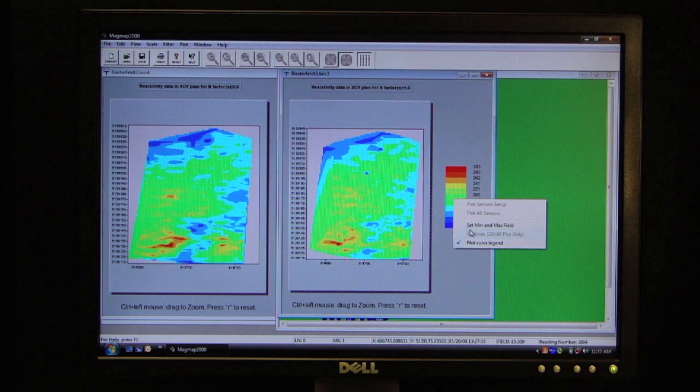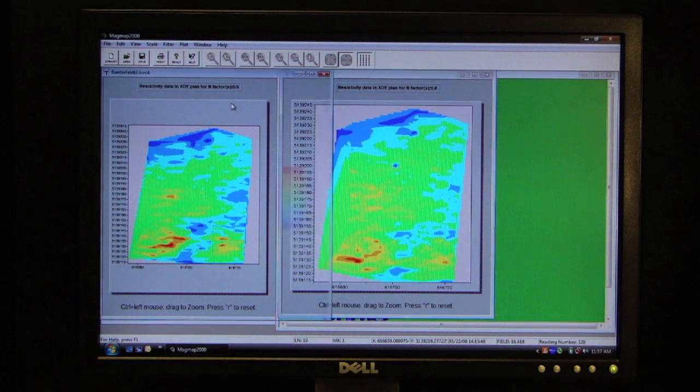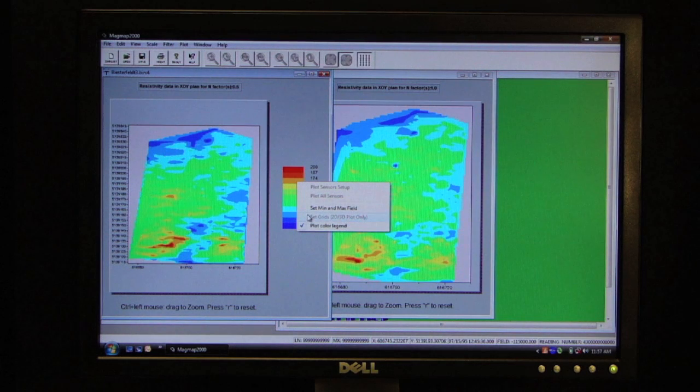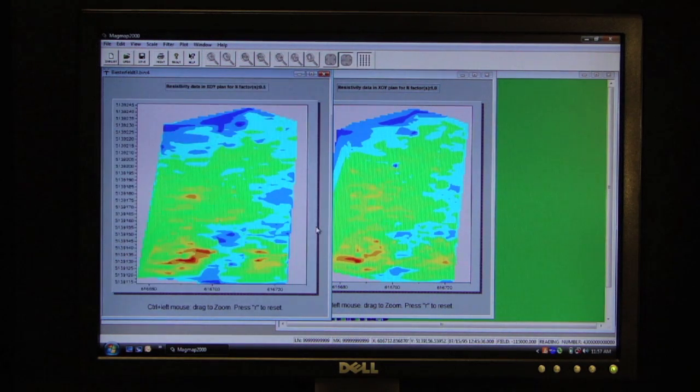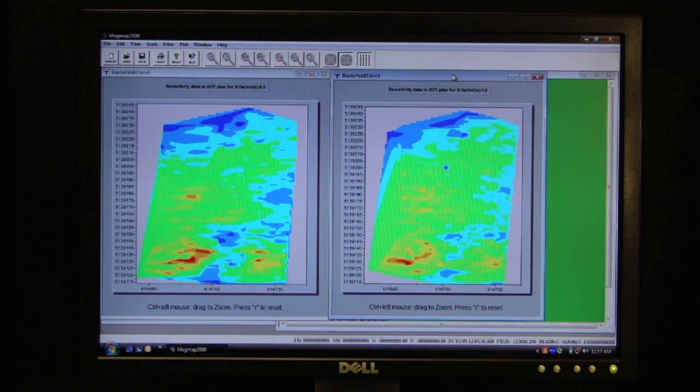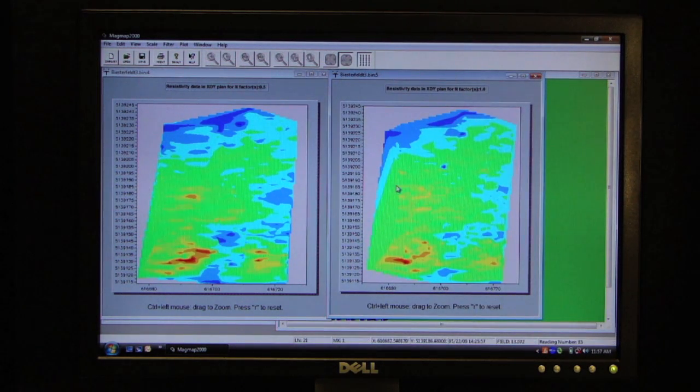And what I'm going to do is I'm going to eliminate the color scale to give me a better view of that map. And now we have views of two different depth sections.